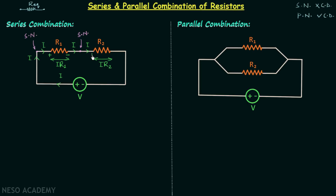There will be a voltage drop across R2 of magnitude I·R2 with the same polarity. Moving forward, we have another simple node where R2 and the voltage source are connected. I is the current leaving R2, entering the simple node, and the same current leaves. So in this circuit, current I is the only current, and the same current flows through both R1 and R2. Whenever the same current flows through resistors connected back to back, the connection is known as series combination.